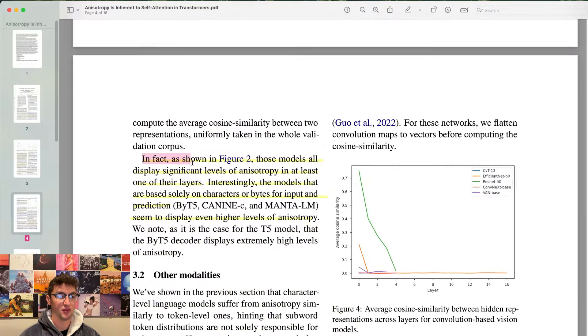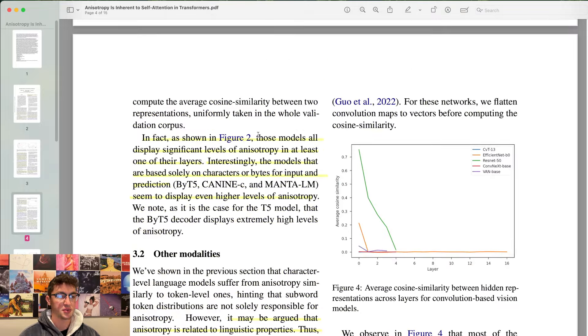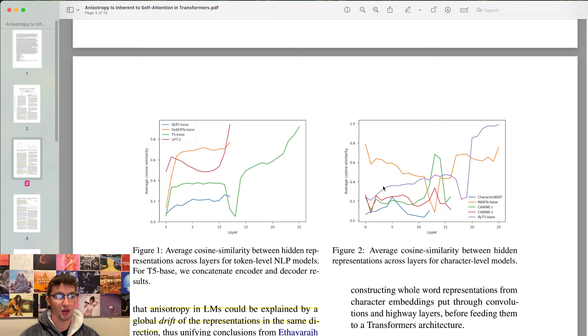If anisotropy was only caused by the presence of unused or rare subwords, those character-level models should be much less prone to this issue. In fact, as shown in figure 2, those models all display significant levels of anisotropy in at least one of their layers. Interestingly, the models that are based solely on characters or bytes for inputs and prediction seem to display even higher levels of anisotropy. So it's actually definitely not due to the rare token issue, given that we actually have byte-level and character-level models that still exhibit anisotropy at certain layers.